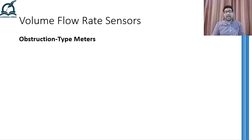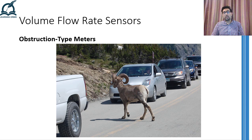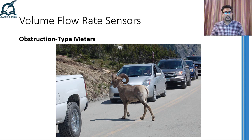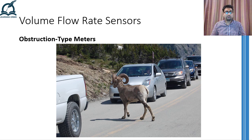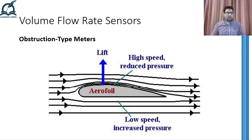The first sub portion of volume flow rate sensors will include only obstruction type meters. The idea in the obstruction type flow meters is to produce an obstruction in the flow of the fluid. If you can remember some concepts of fluid flow from your physics course, you must know that if the speed of the fluid that is flowing is reduced, its pressure increases, whereas an increase in speed will decrease the pressure.